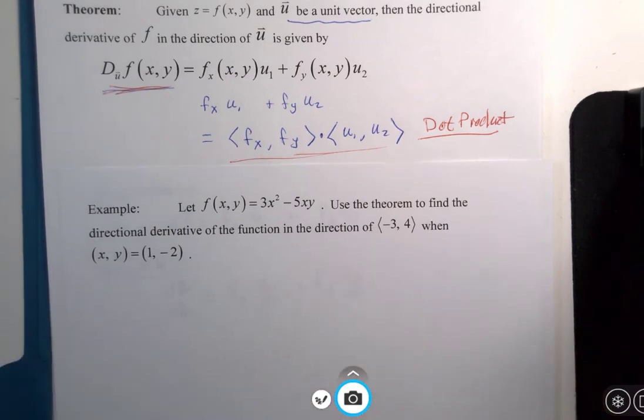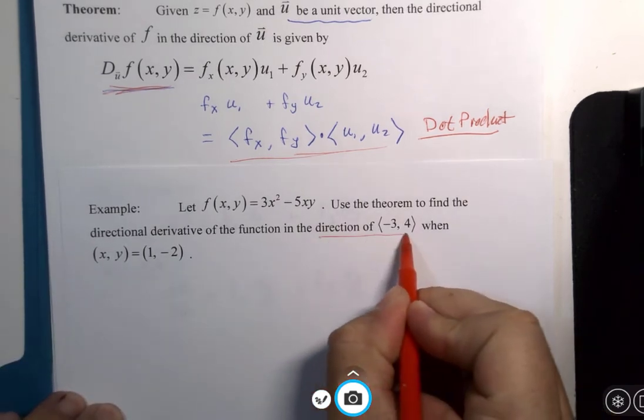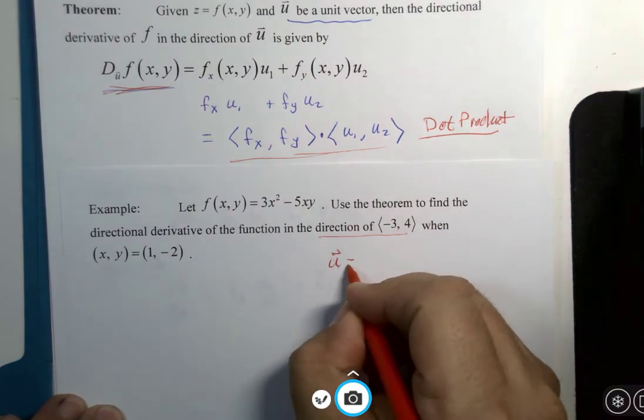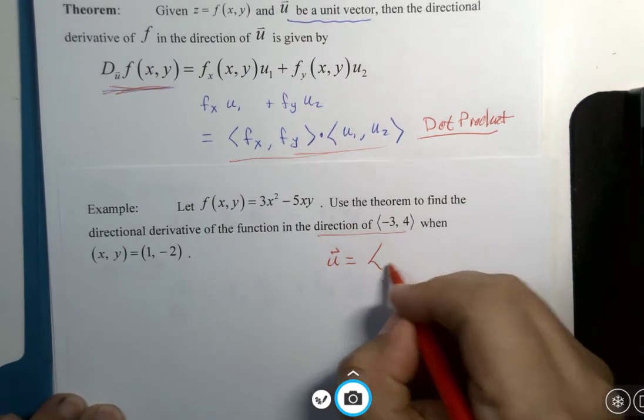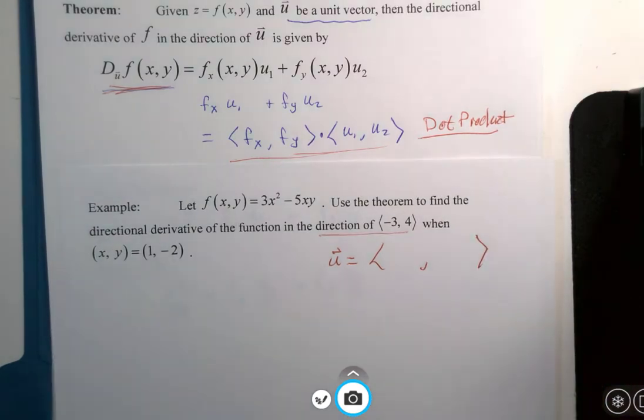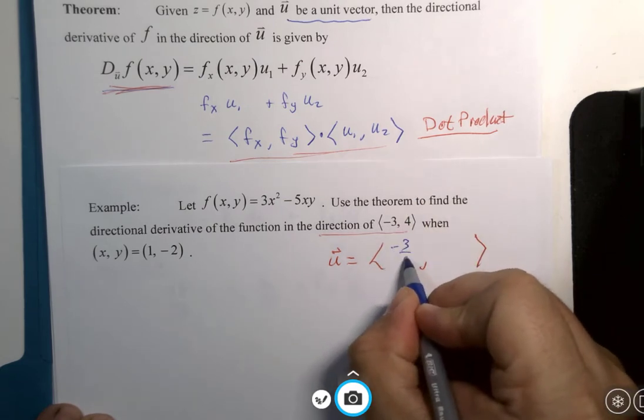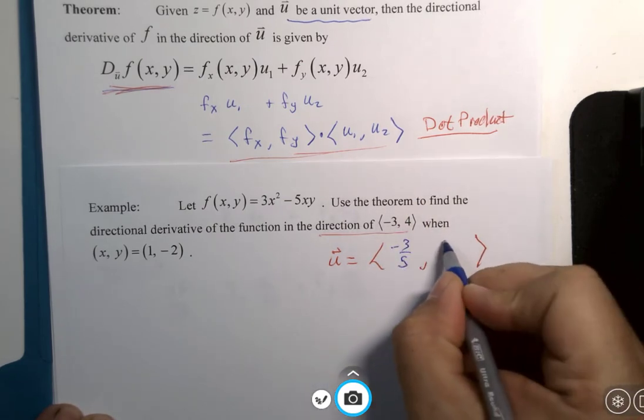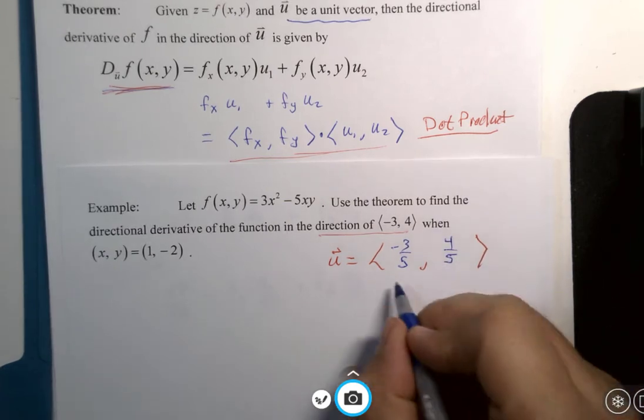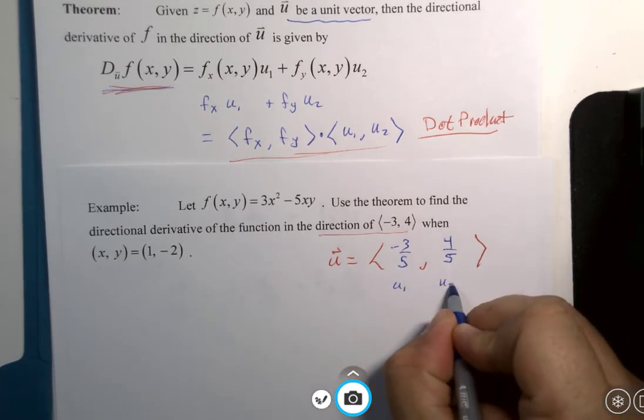Just slide up as far as I can. So we had a direction, but it wasn't a unit vector. To find the unit vector, we had to find the magnitude of that vector and divide by the magnitude. And this we have already done previously, negative three-fifths and four-fifths was our unit vector. So that would be u1 and u2.